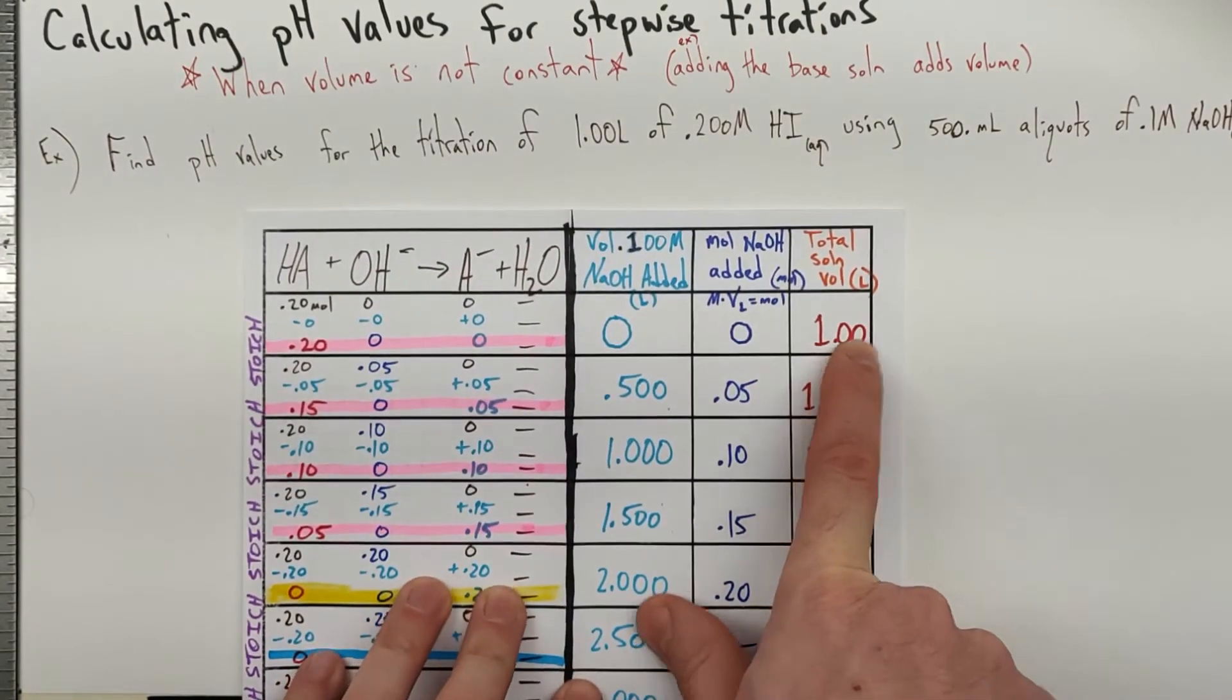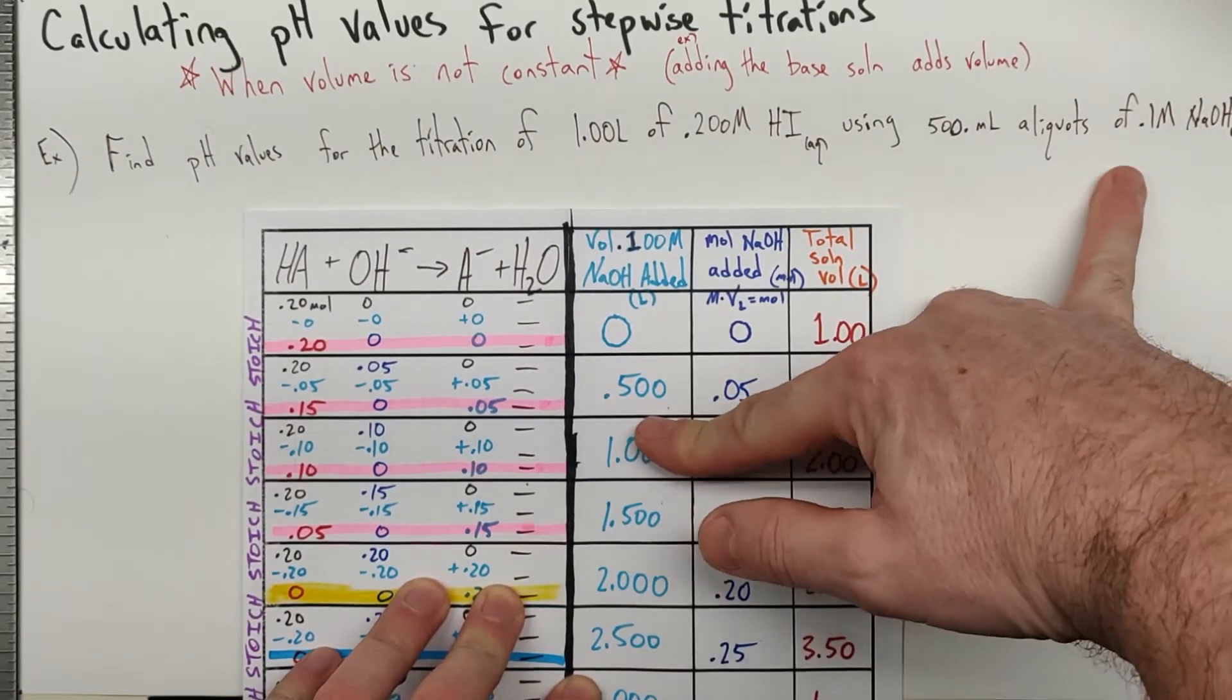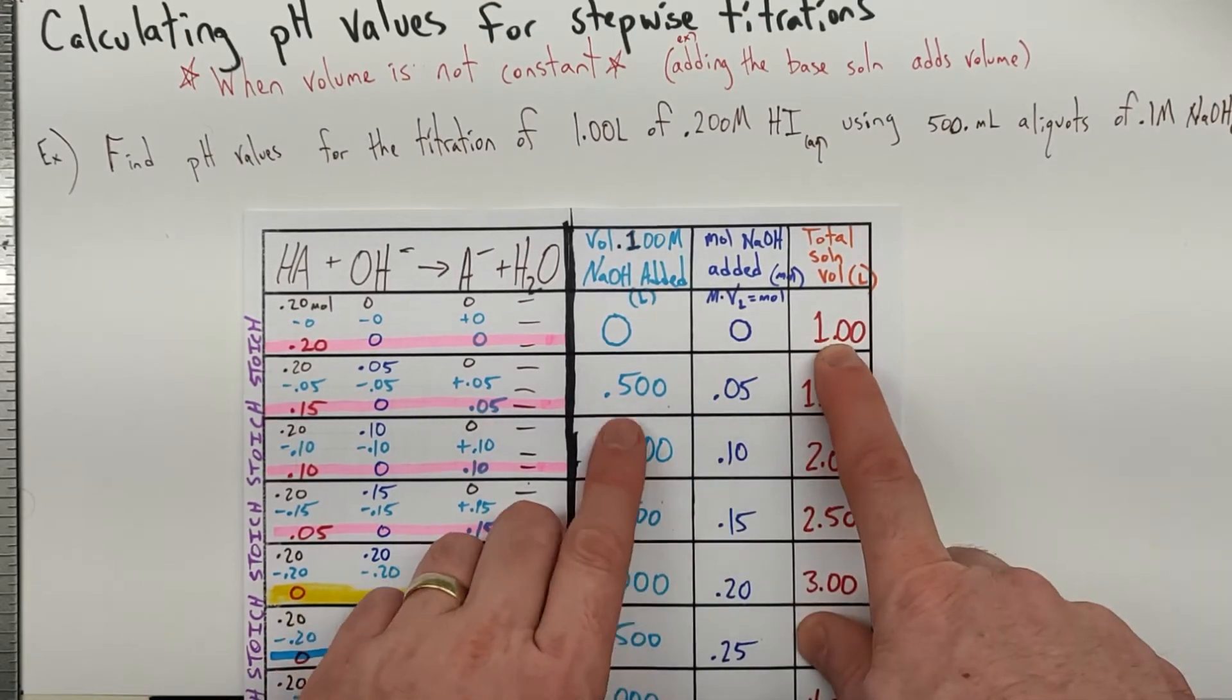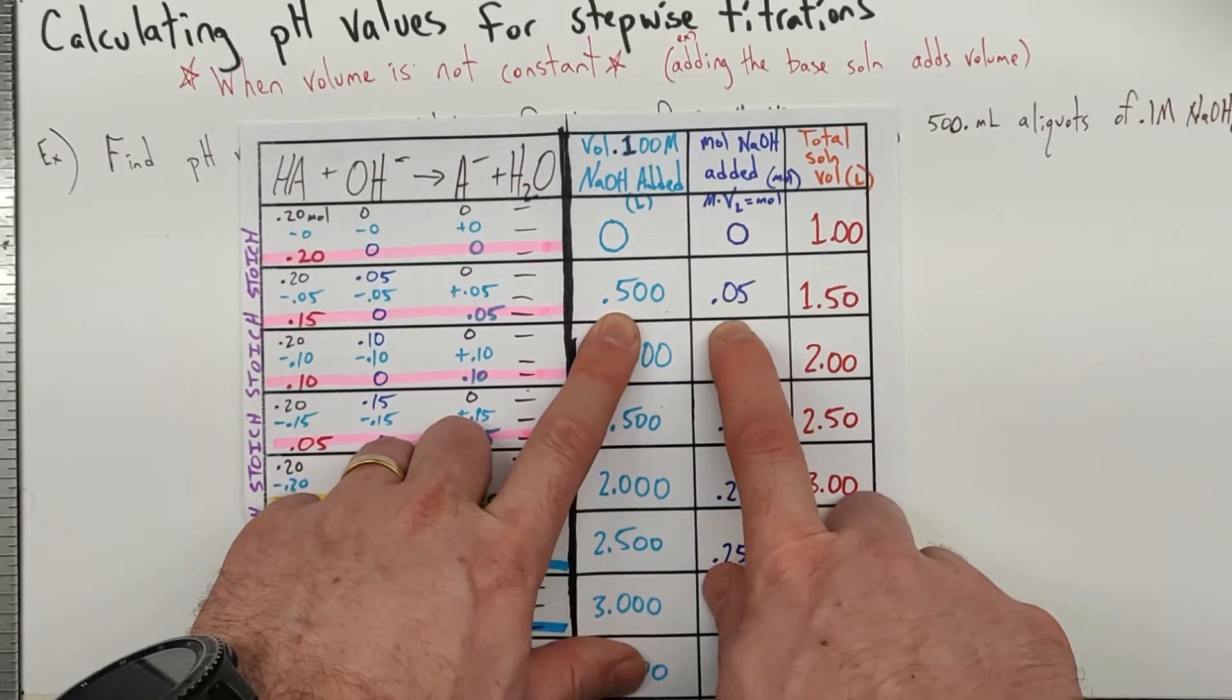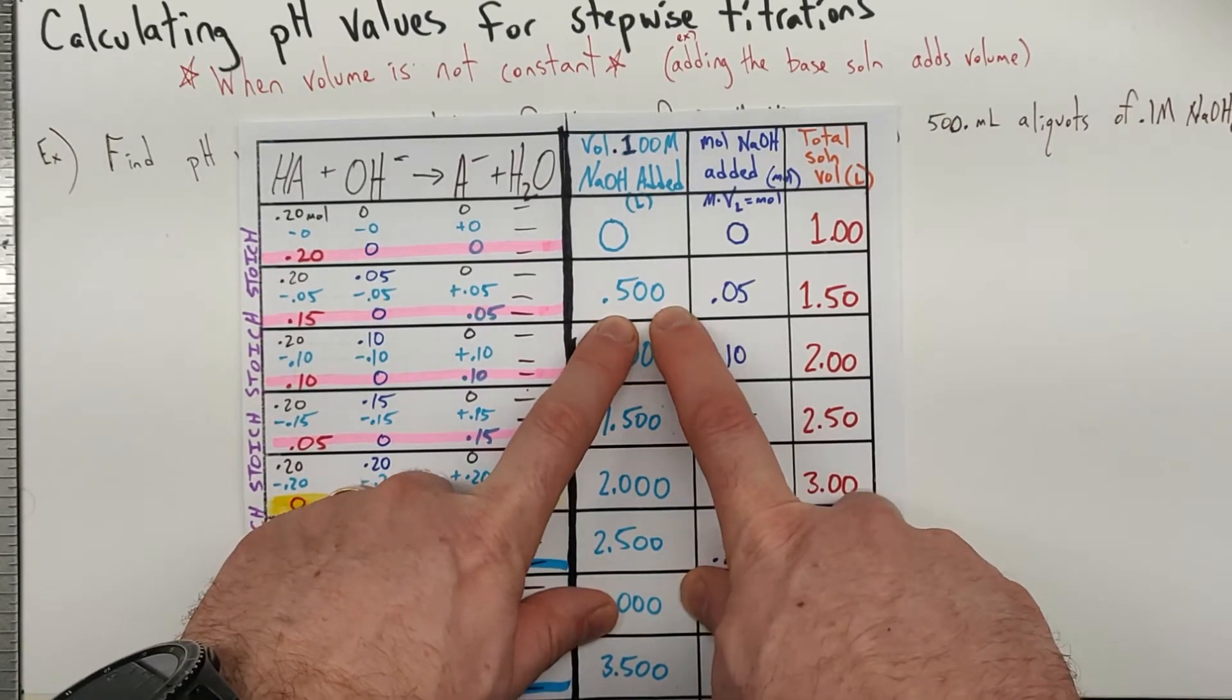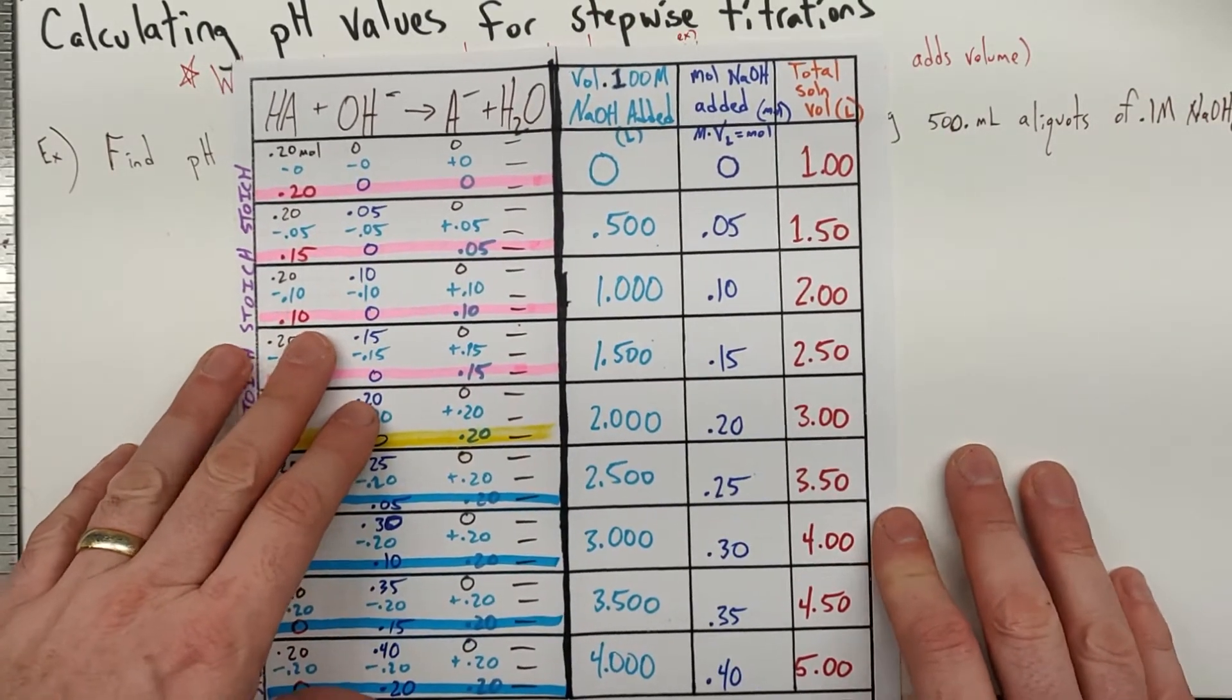For our first increment, our first aliquot, we added 0.5 liters, 500 milliliters of NaOH, corresponding to 0.1 molar, so that's 0.05 moles of NaOH. But now we went from 1 liter to 1 liter plus 0.5, which is 1.5. So each addition of 0.05 moles of the sodium hydroxide is adding 500 milliliters of solution. We end up with a pretty unrealistic 5 liters in the end, but the numbers work out pretty well for us.